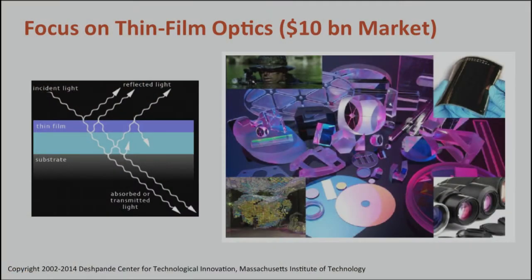To demonstrate this concept, we focused on the problem of thin film optics, which is a $10 billion market. This is where you try to figure out some sequence of layers to put on top of a substrate to modify the optical properties in some desired way. The problem we personally cared about was how do we reduce reflection from a solar panel such that more light can go into the cell and the cell can become more efficient.